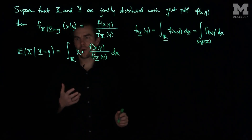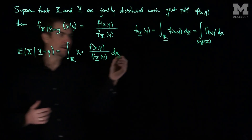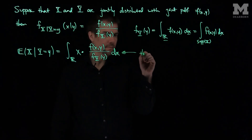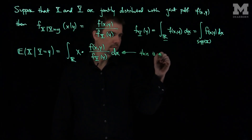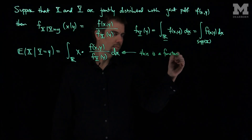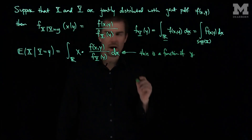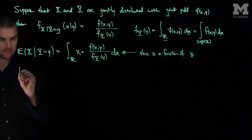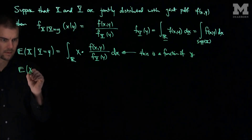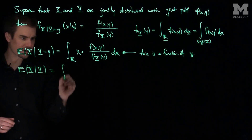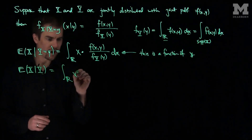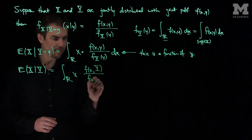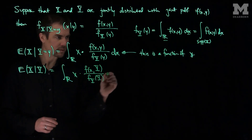Now I'll compute the expected value of this — this is a random variable, so it is a function of the random variable y. So I can think of this as saying the expected value of x given the random variable capital Y, which I can formally write as the integral over r of x times fxy over fy of y, dx.